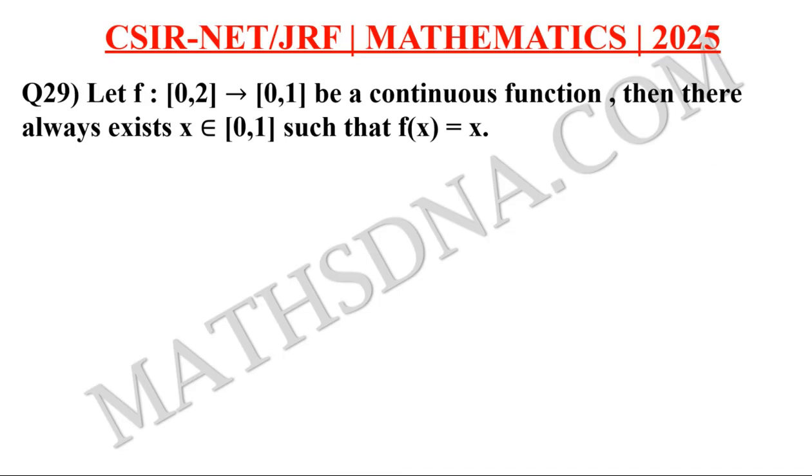Moving to the question. The question is: Let f be a function from closed interval [0,2] to closed interval [0,1] that is continuous. Then, there always exists x belongs to closed interval [0,1] such that f(x) = x.